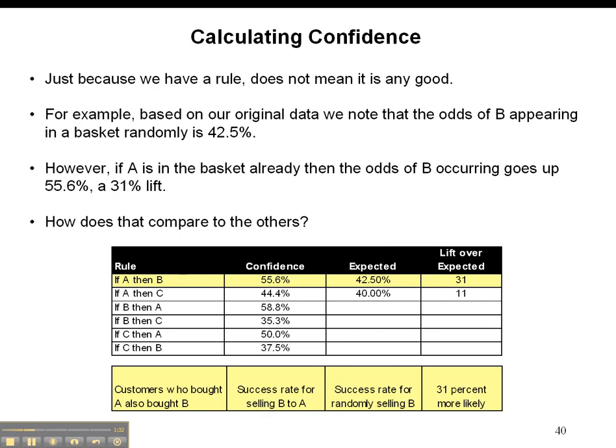So that's what we call lift. So let's go to this chart where I've calculated the confidence and brought that over from the other slide - 55.6%, 44.4%. And then notice I've got the others filled in, so you can check your calculations if you guys are trying to play with those numbers. Now, so I've got the rule: the probability that B will be in the cart if A is already in there - if A then B - is 55.6%. What is just the likelihood that B will be in the cart in general, guys?